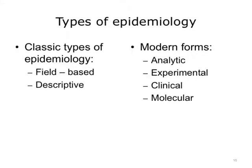As we progress in understanding epidemiology, we begin to see how information tools in public health are important in examining issues in population health. Examining issues through epidemiological studies means applying research in different ways to solve different types of problems. Epidemiological studies come in many different forms. The two classic types include field-based and descriptive, whereas more modern forms include analytical, experimental, clinical, and molecular.